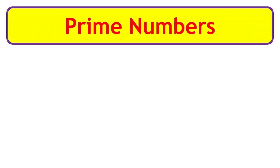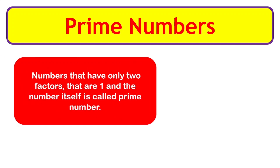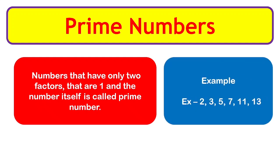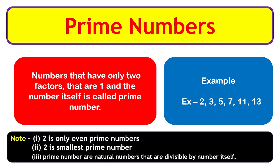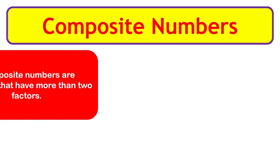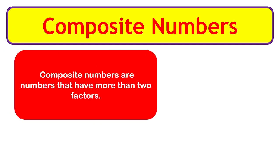Prime numbers: numbers that have only two factors — that is, 1 and the number itself — are called prime numbers. Examples: 2, 3, 5, 7, 11, 13, etc. Notes: 2 is the only even prime number, 2 is the smallest prime number, and prime numbers are natural numbers divisible only by themselves.